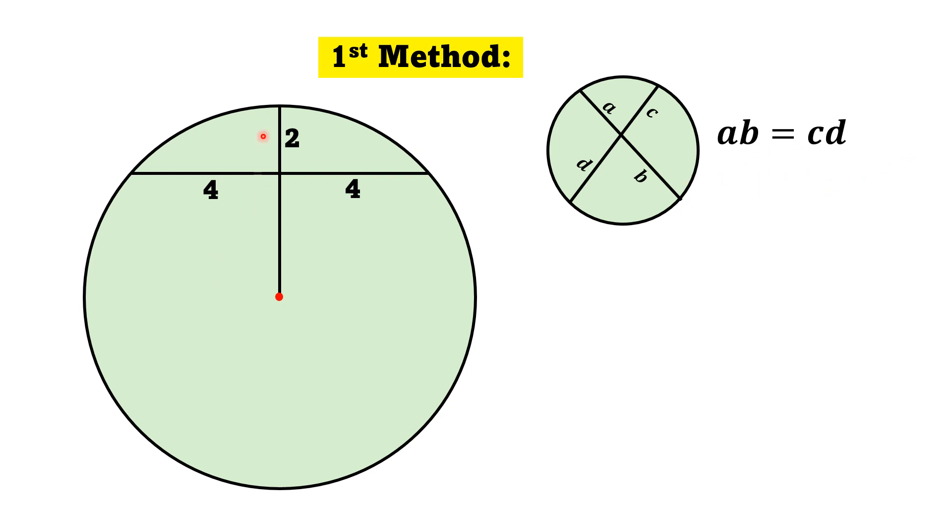For this particular chord theorem, let's extend this radial line and it becomes the diameter of this circle. Now, if the radius of the circle is R, then this particular length is 2R minus 2.